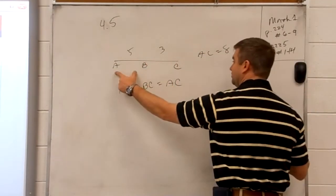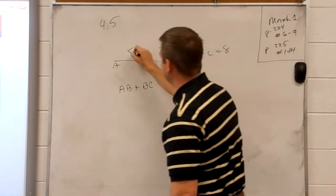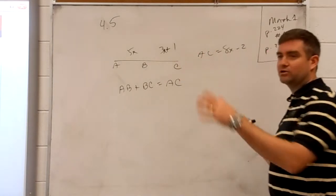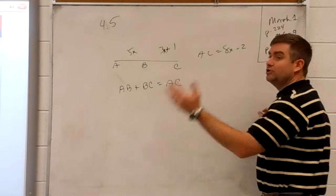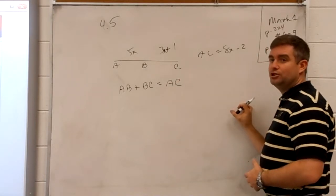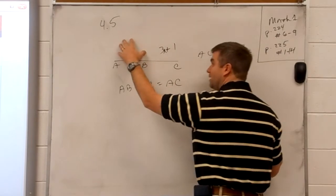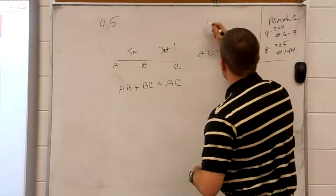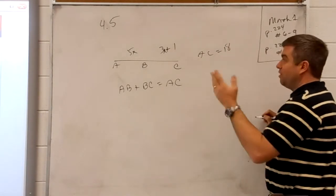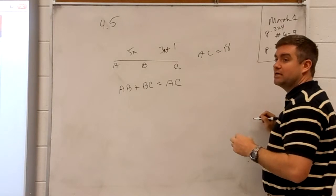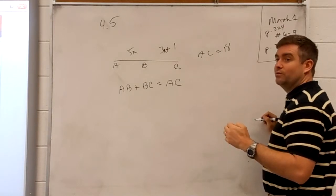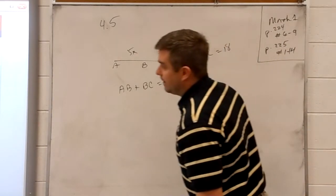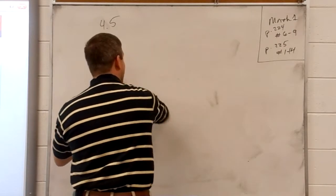What if I put x, 3x plus one, and this is 8x minus two? We're not going to solve this, but you get the idea. If it has algebra — variables — you would do it exactly the same. This amount plus this amount equals the total amount. Sometimes they give you the total amount, maybe eighteen, and you solve for x. You may get a fraction or a decimal.